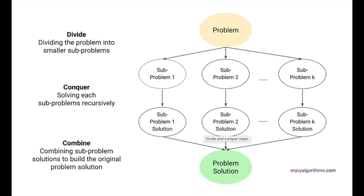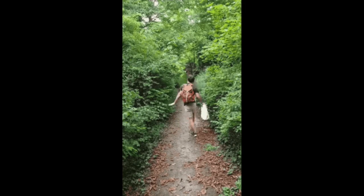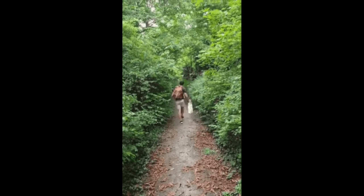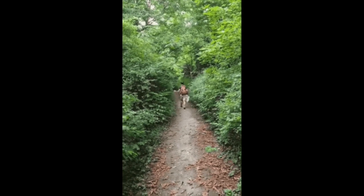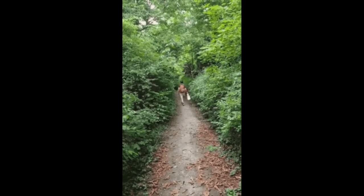That sounds great, but how does it apply to his situation? Let's say you divide the forest into smaller sections and search each section individually. By doing this, you'll be able to find your way out of the forest much faster. See how Jack is making progress — by breaking down the problem and solving it piece by piece, he's able to find his way out of the forest.